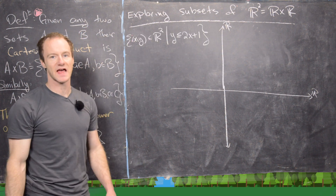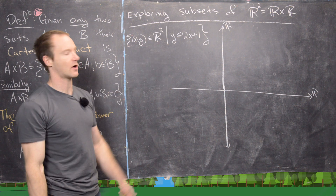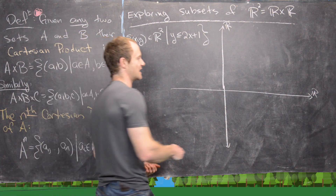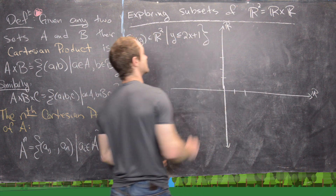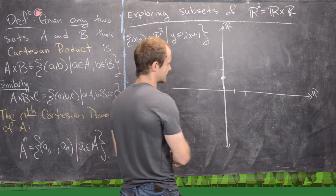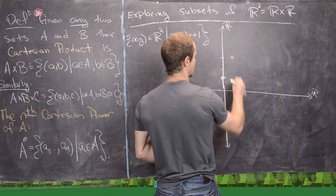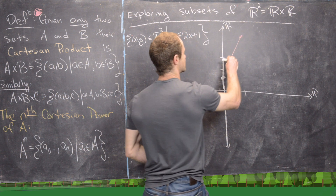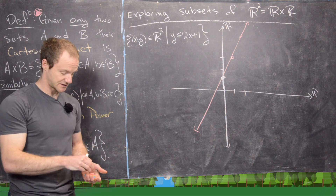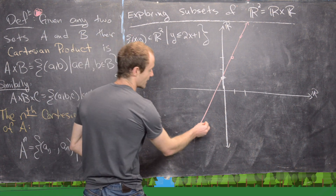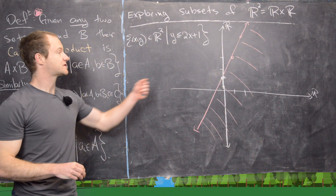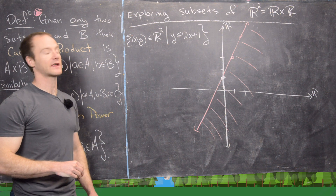For our next example, consider the set of all ordered pairs (x, y) in R cross R where y ≤ 2x + 1. The strategy is straightforward: graph the line y = 2x + 1, which has a y-intercept of 1 and slope 2, and then the set is everything below and on that line.